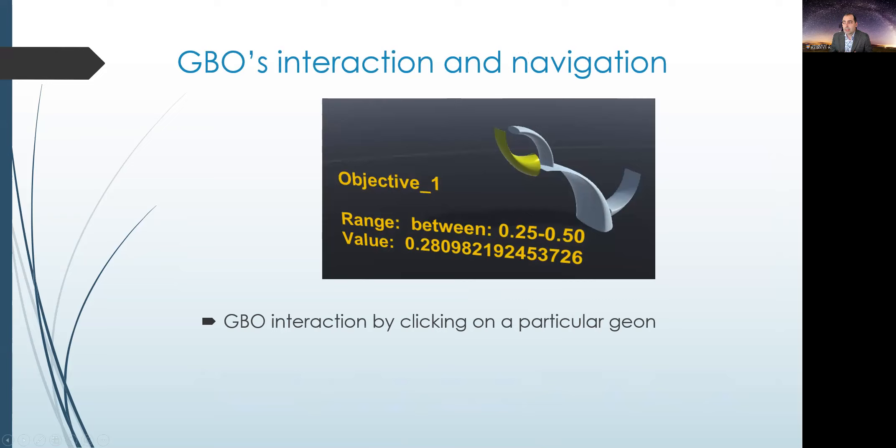We added an interactive element to it, and this was needed in order to enable the participants to query each Geon value and range. And in this case, we simply click on the Geon, and the small display will show up, where in this case you can see in the image it shows us the range between, in this case is between 0.25 and 0.5. That's for the objective one, and that's the value that normalized data holds. So the user will be able to pull this information out and compare it between various Geons. So if there's a Geon next to it, you can click on that and get the same information.